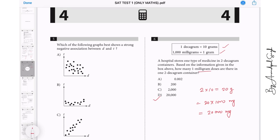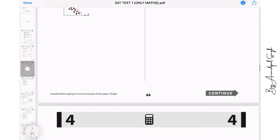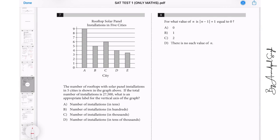It means we will go with option number D. Question number seven. It says that the number of rooftops with solar panel installation in the five cities, so it is A, B, C, D and E. If the total number of installation is 27,500, what is the appropriate level for the vertical axis? See here, if you observe, these are nine, these are five, so 14, 14 plus 6 is 20, and then 24, and then 27.5 basically.